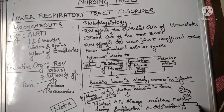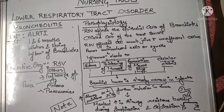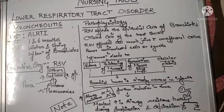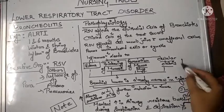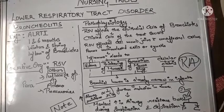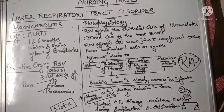If this air trapping is partial, it leads to emphysematous changes. If it is complete, it leads to atelectasis. Due to diminished ventilation-perfusion ratio, hypoxemia occurs and carbon dioxide is retained. This CO2 retention ultimately leads to respiratory acidosis.